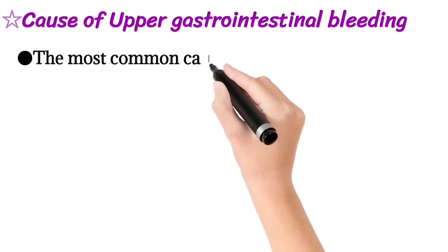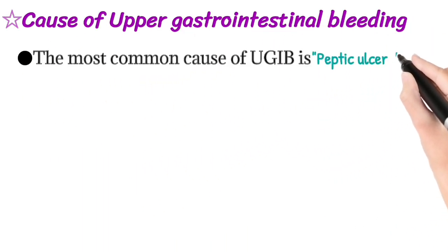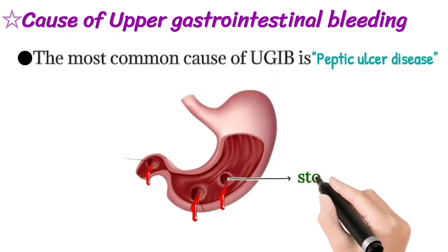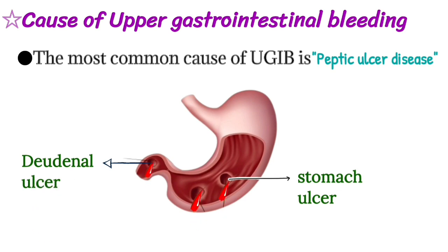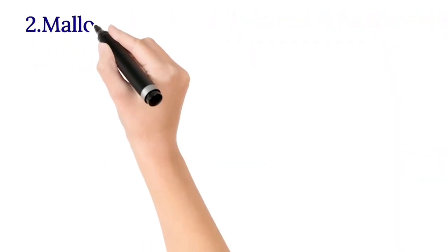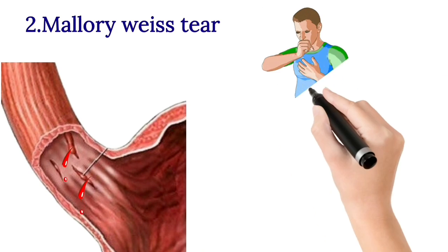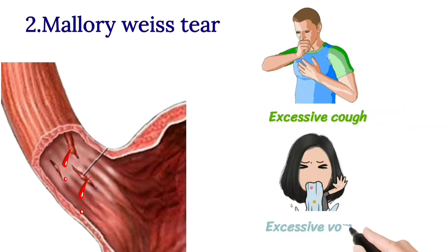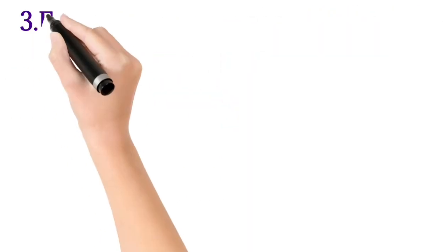The most common cause of upper GI bleeding is peptic ulcer disease. You can see in the picture the stomach ulcer and duodenal ulcer. The second cause is Mallory-Weiss tear, which results from prolonged and forceful vomiting, coughing, or convulsion.